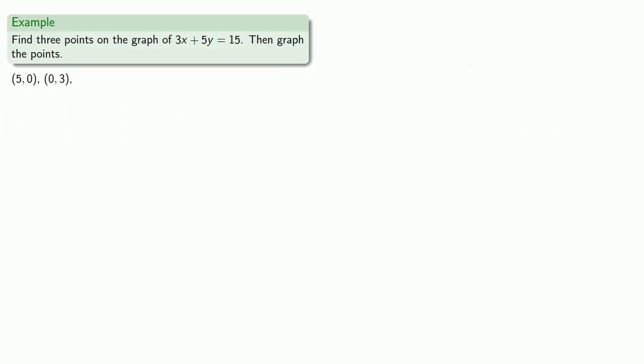If we want another point, we have to choose a value for either x or y. Maybe we'll choose x equals 10. That seems to be a nice, easy value to work with. Equals means replaceable, so we'll replace every occurrence of x with a 10. We'll get a nice equation, and we'll solve it for y. That tells us x equals 10, y equals negative 3 is a point on the graph, and so I'll record that as the coordinate (10, -3).